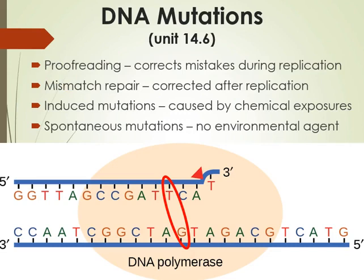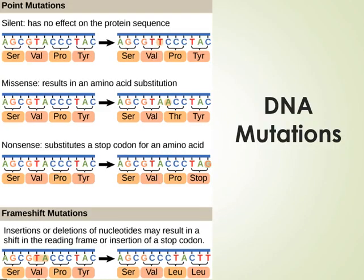Some mutations are caused by chemical exposures, sun exposure, or x-rays, while others happen spontaneously with no apparent cause. Some of these mutations are point mutations — where one incorrect base is placed instead of the correct complementary base pair.